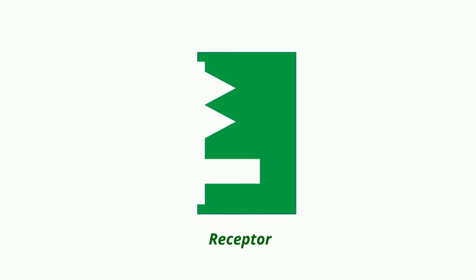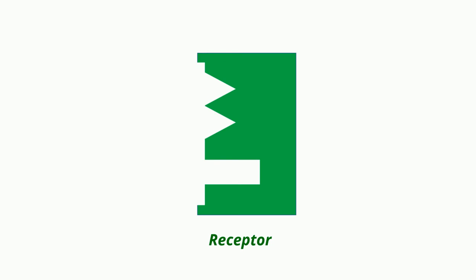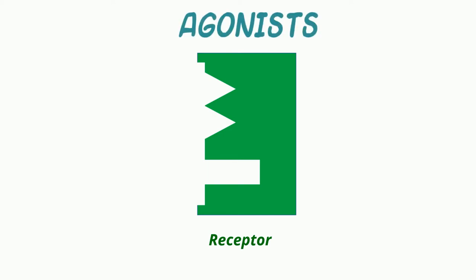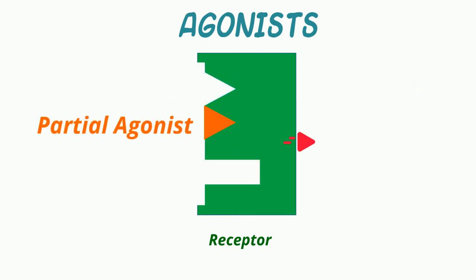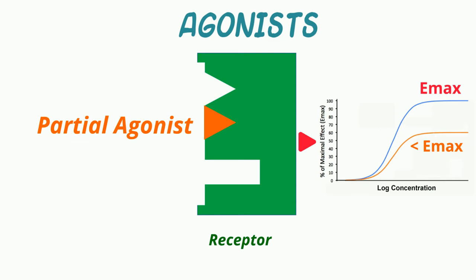With that background and review, let's now talk about different types of drugs interacting with receptors. Compounds interacting with receptors are divided into distinct pharmacological types based upon their intrinsic efficacy on a receptor signal transduction system. A full agonist is a compound that achieves the largest biological effect at its maximally effective concentration. A partial agonist is a compound for which the Emax, and therefore the intrinsic efficacy, is less than that of a full agonist.